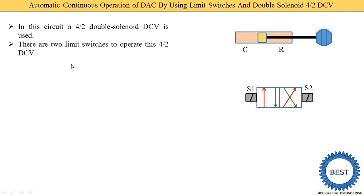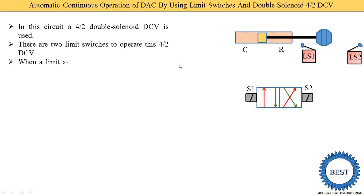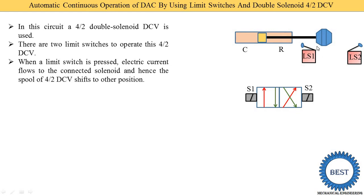There are two limit switches to operate this 4 by 2 DCV — two switches are required because there are two solenoids, S1 and S2. One limit switch is placed on the left side of the cam and another on the right side. These limit switches are operated when the cylinder piston extends or retracts, and they are connected to the solenoids by electric current.